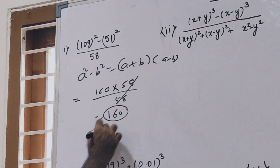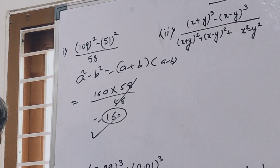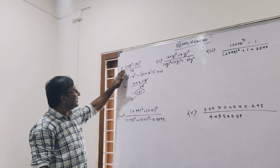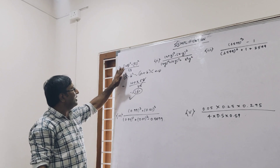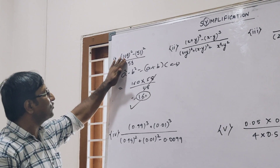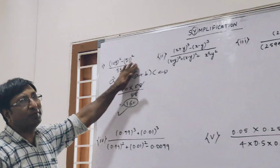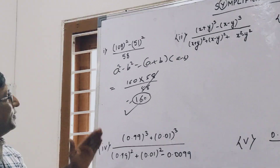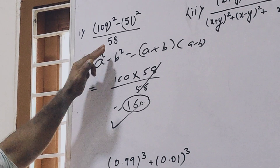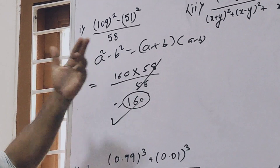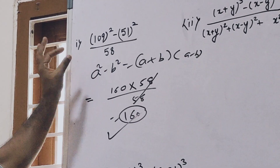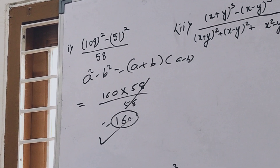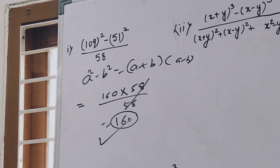It is very easy — only by watching this question: 109 squared minus 51 squared divided by 58. So a plus b is 160, and a minus b is 58, which cancels out. So your answer is 160.